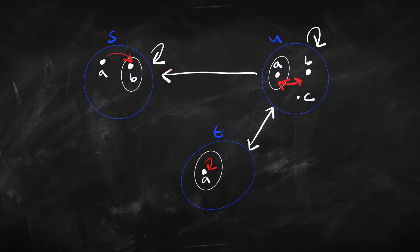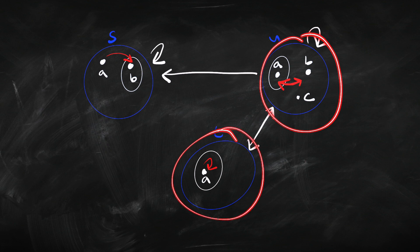For instance, here's A and B; here's A, B, and C; and here's just A. So, a variable domain model is a model where each possible world doesn't need to have the same things in its domain. How do we set things up so that we have a variable domain model?